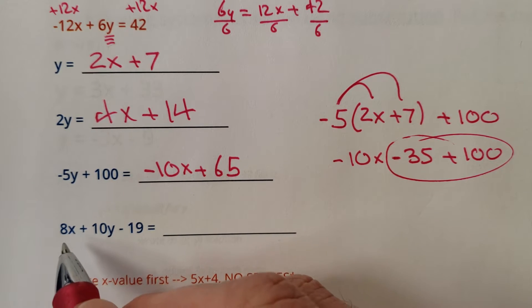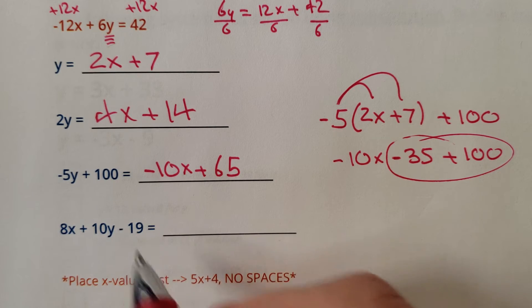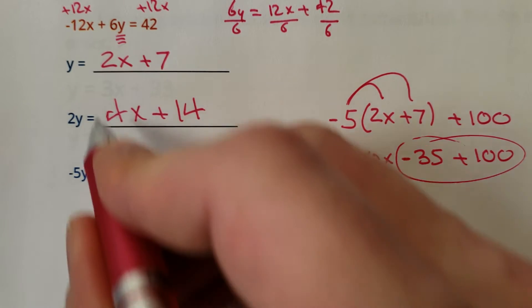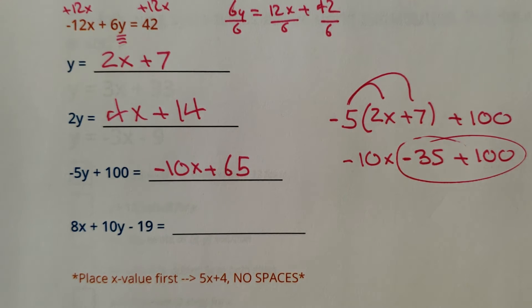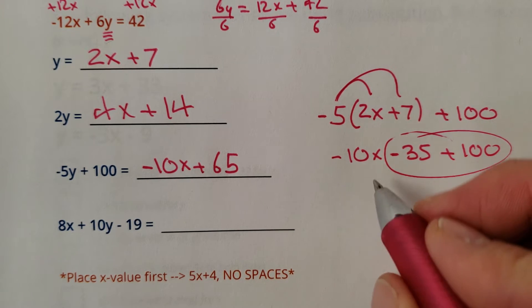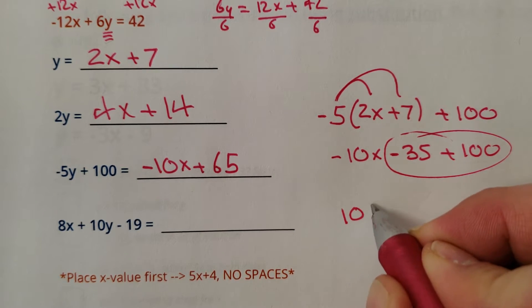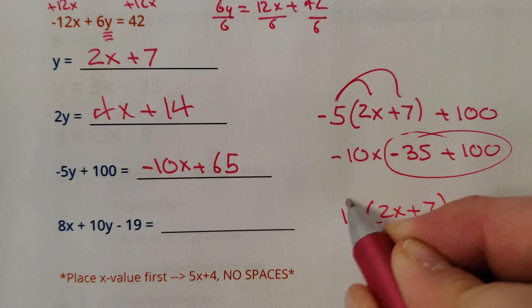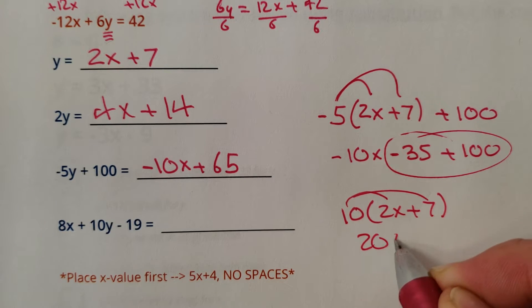What is this? 8x plus 10y minus 19. It's actually not that bad. 10y means we would just take this and we would take it times 10. Basically add a decimal to it. I'll write it over here. So 10 times 2x plus 7 would be 20x plus 70.